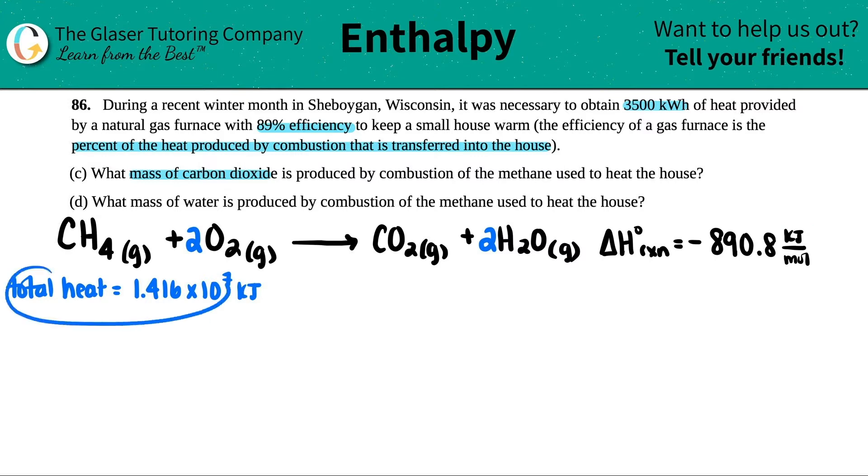We also found out that the total heat that is needed to heat this house is 1.416 times 10 to the seventh kilojoules. So I'm going to use this information in order to answer C. If you need a refresher as to how we got this information, you could always go back to part A. If you're on the playlist, it's just like two videos back.